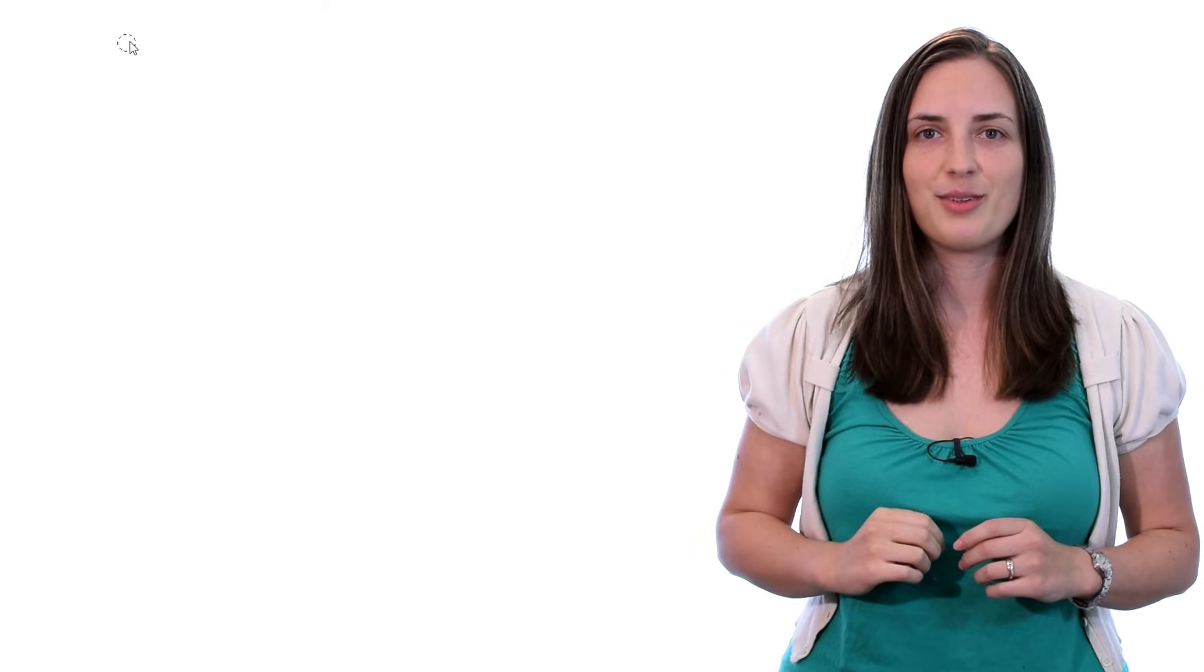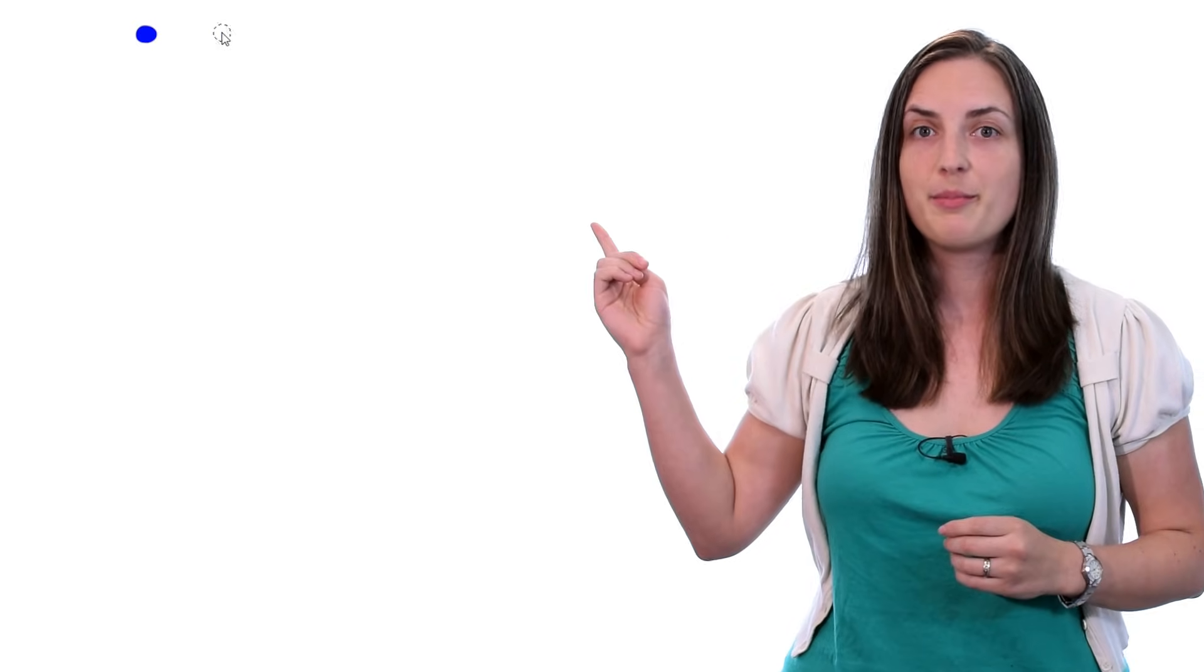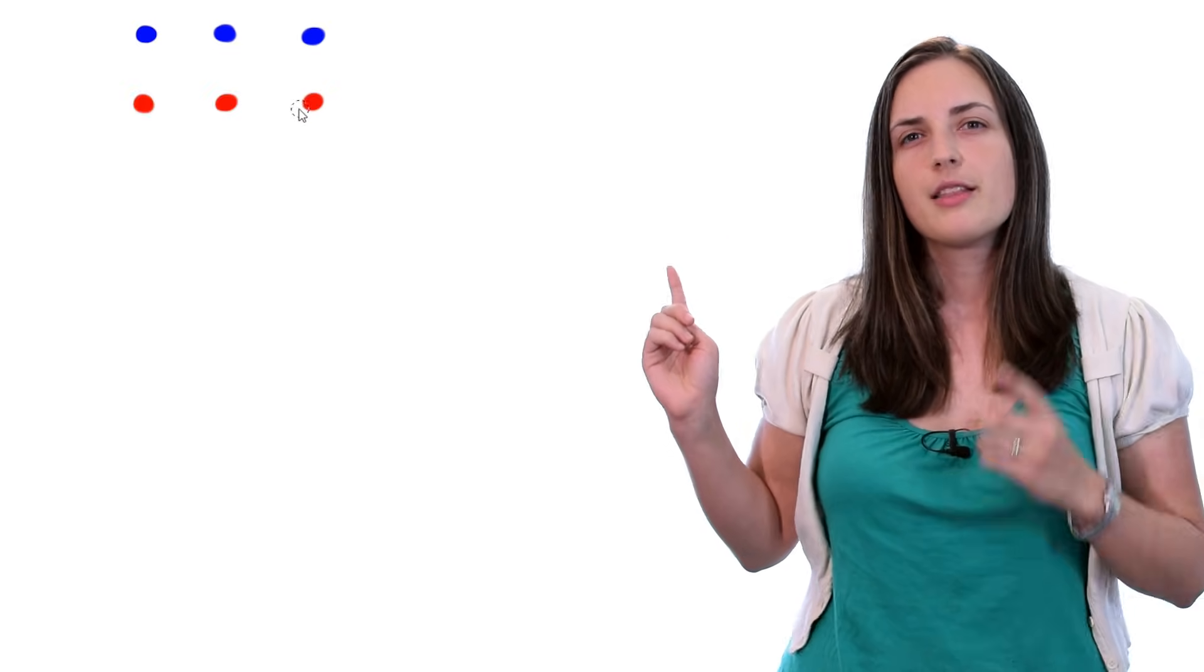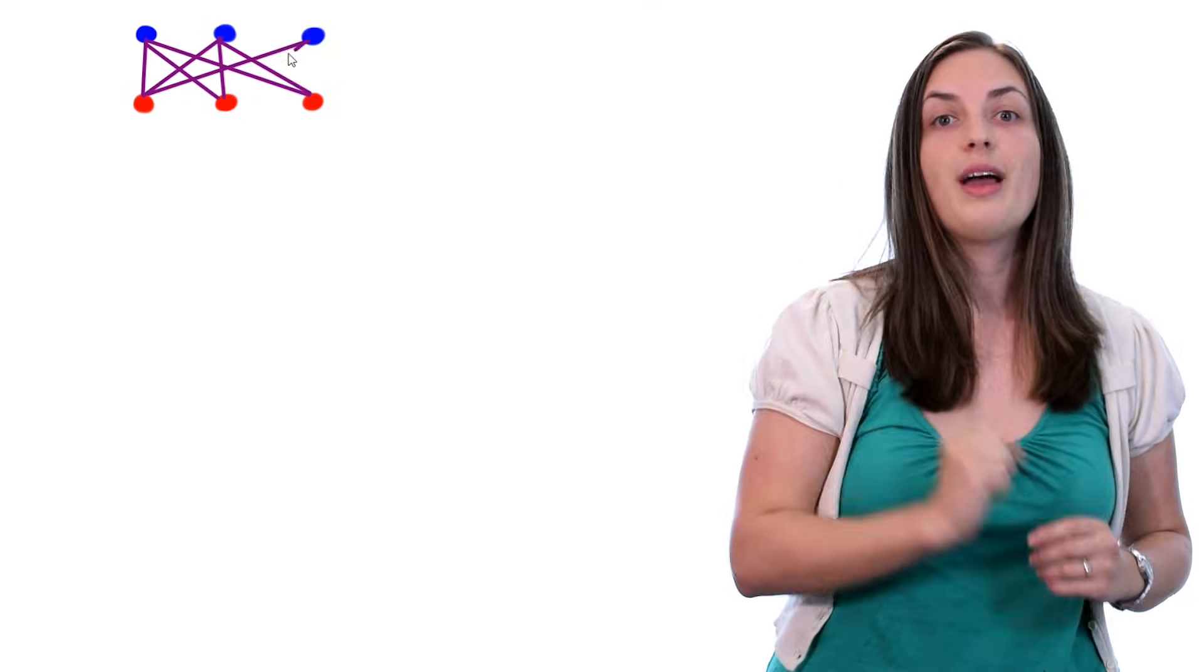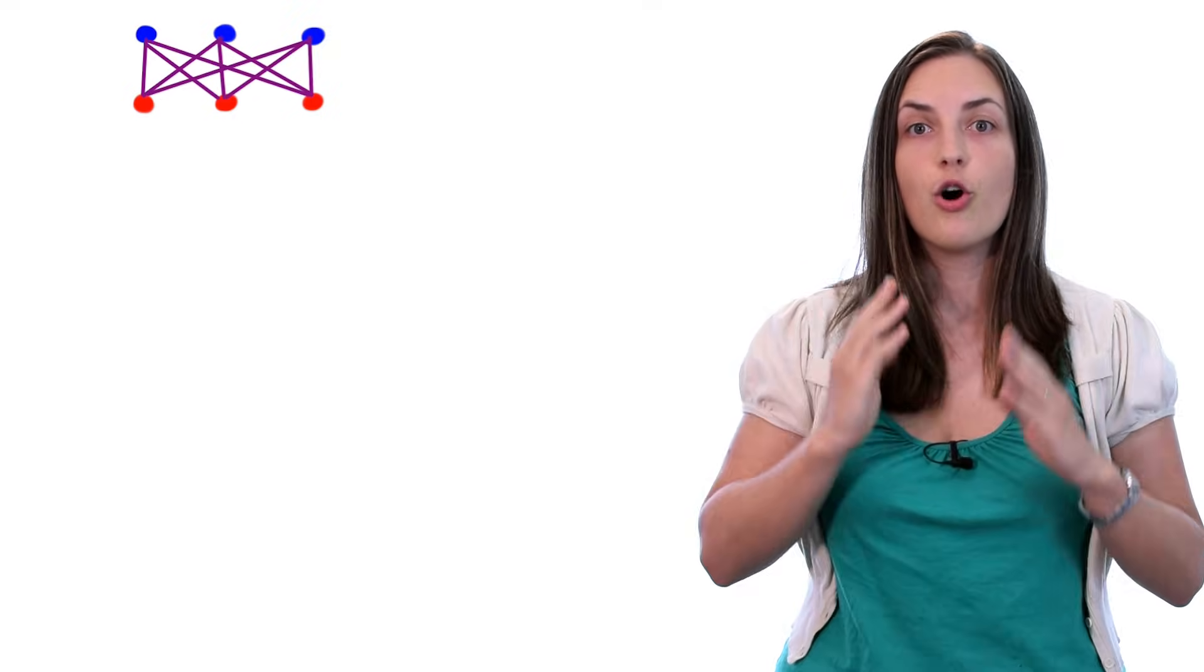Let's look at another example. I'll start by drawing three blue vertices and then three red vertices. The question is, can you connect every blue vertex to every red vertex so that no edges cross? You may recall that this graph is called a complete bipartite graph. In particular, this graph is K33.